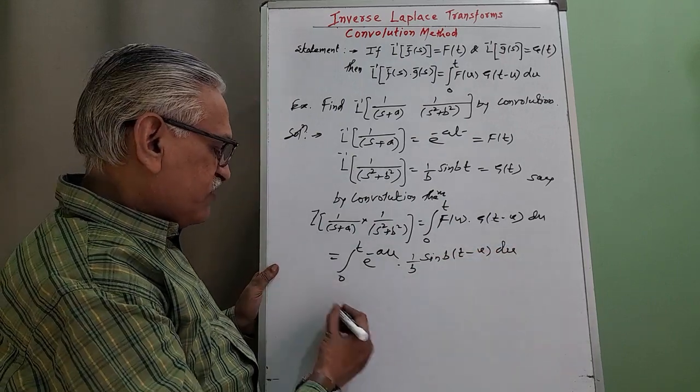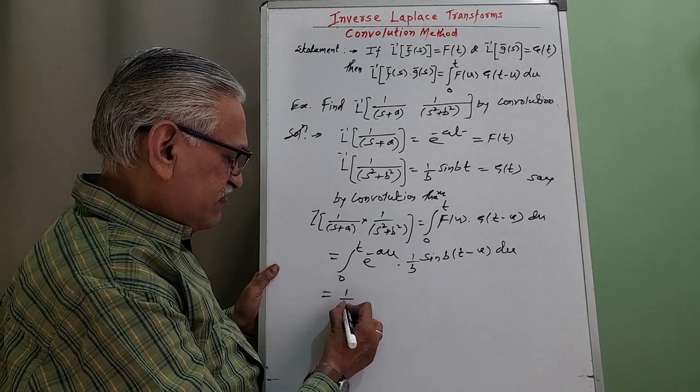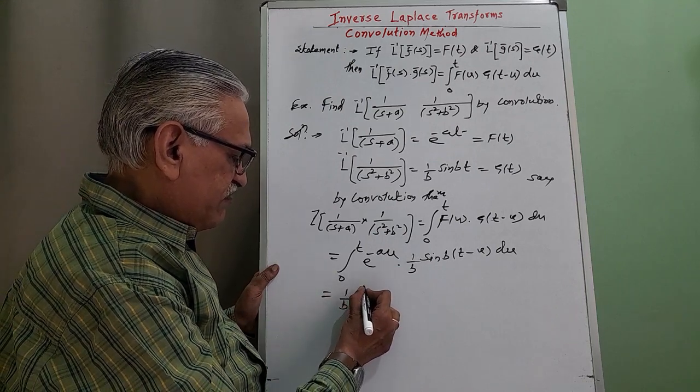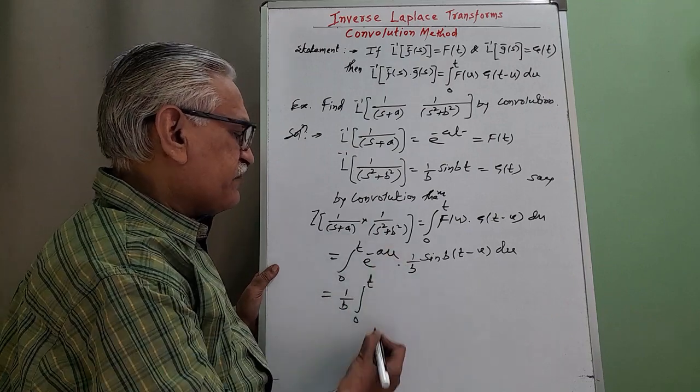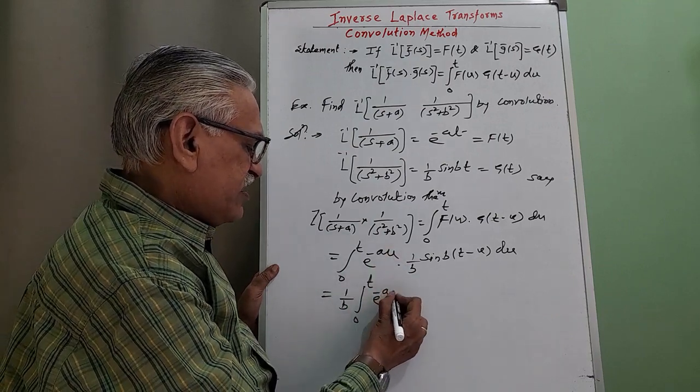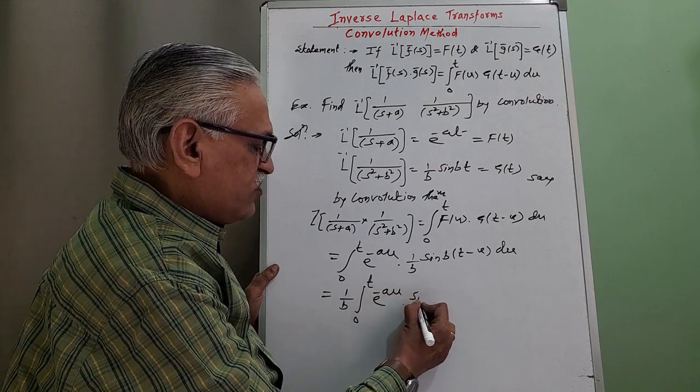1 by b is constant term we take outside, integration from 0 to t, remaining terms are e raised to minus au into sin of bt minus bu.